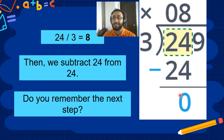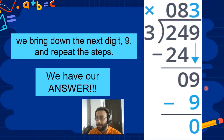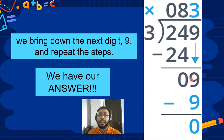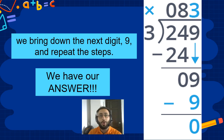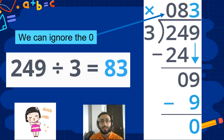Nice. Now we bring the next digit down. How many 3's fit into 9? Easy — 3. 3 times 3 equals 9. Now we subtract and we got 0. So this is our quotient: 83 is our quotient.